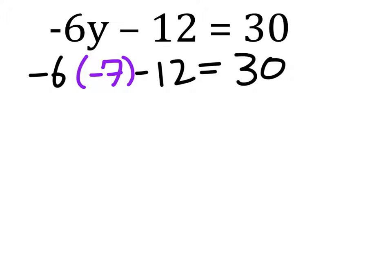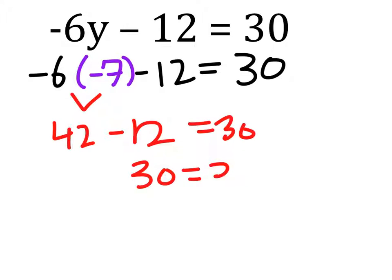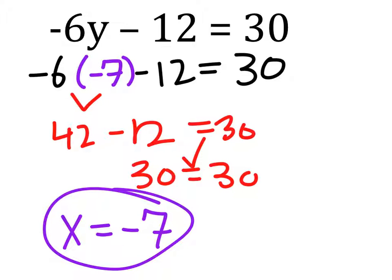I guess I'm this deep into it, so fine. 42 minus 12 needs to equal 30. 42 minus 12 does equal 30. 30 does equal 30. Bam, checked. So as it turns out, y does equal negative 7, and there is only one solution.